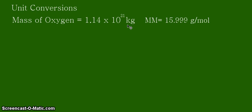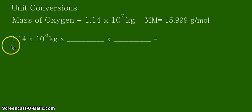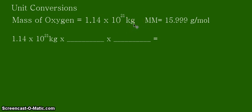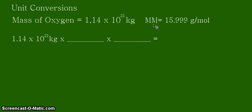To start, we begin with the given value: 1.14 times 10 to the 21 kilograms. We have two blanks here, meaning we need two conversion factors. The first one we already know: one kilogram contains 1,000 grams. The second conversion factor we need is that 15.99 grams of oxygen is present per mole of oxygen.